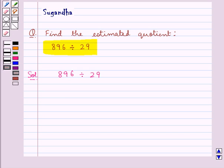first we consider the number 896 and we estimate this to the nearest 100. So 896 estimated to the nearest 100 would be given by,